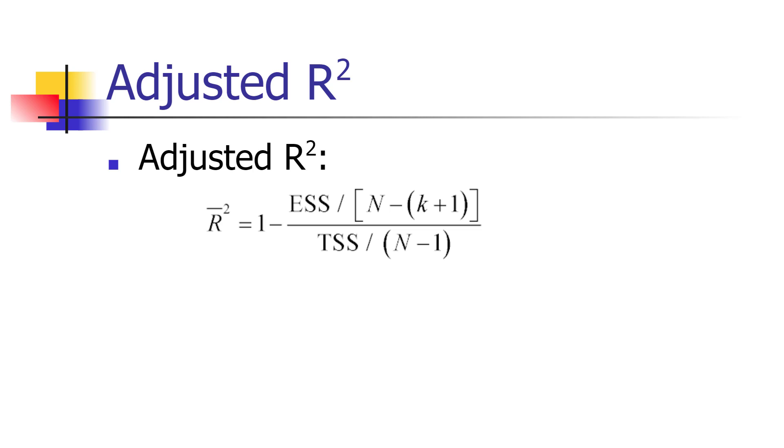And if the denominator of that numerator ratio goes down in size, the numerator itself is going to be larger. So an increase in k will make the last term in that definition larger.